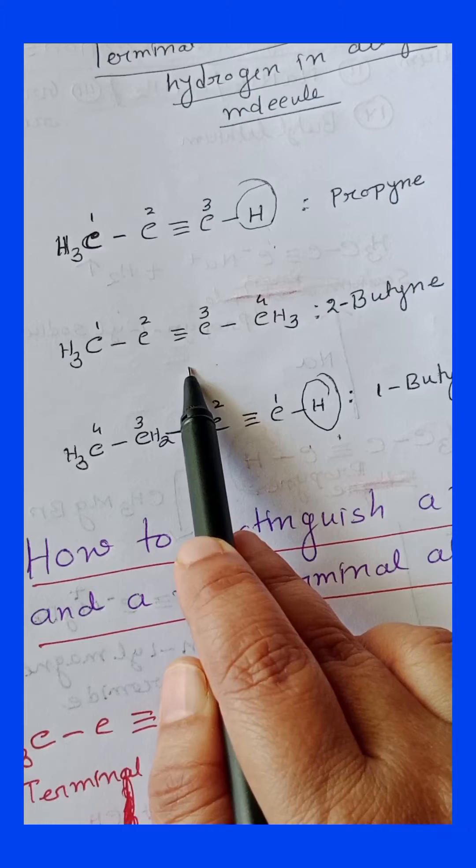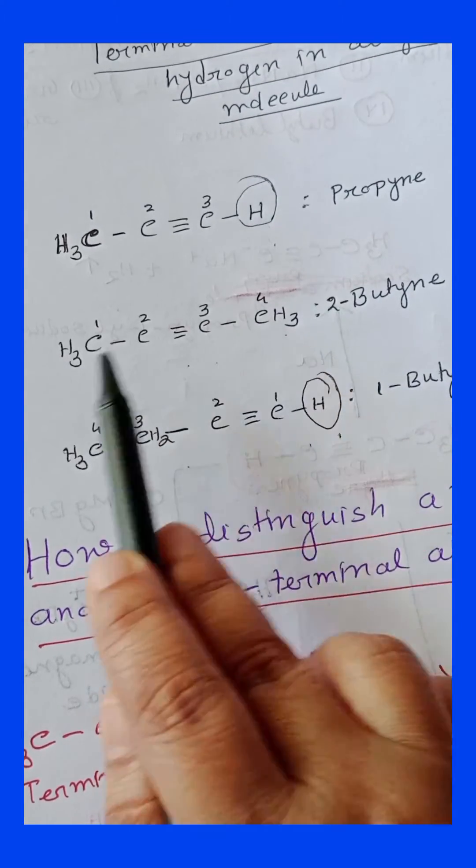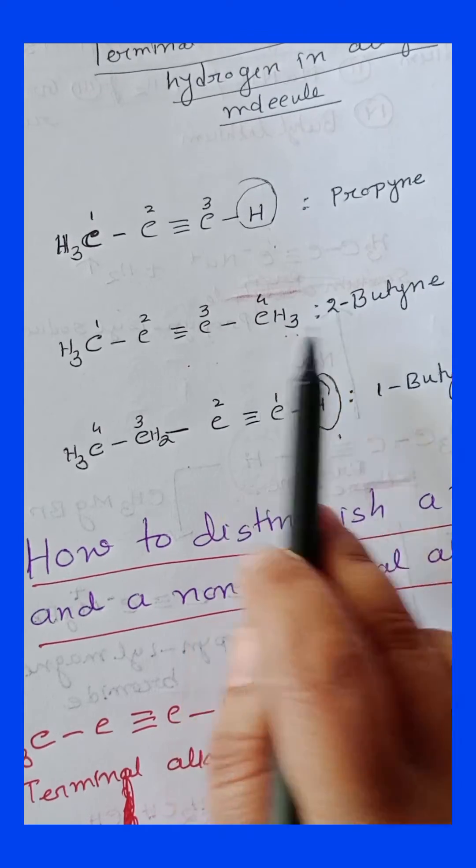Now this is 2-butyne. Here you can see there is no hydrogen at the end of the molecule. So that's why it is non-terminal alkyne.